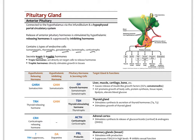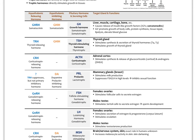The first major anterior pituitary hormone is growth hormone, which accounts for about 40% of all anterior pituitary secretion. It's also called somatotrophin and is released by somatotrophs. The hypothalamic releasing hormone is growth hormone releasing hormone, or somatocrinin, GHRH. There is also an inhibiting hormone called somatostatin, which is growth hormone inhibiting hormone.